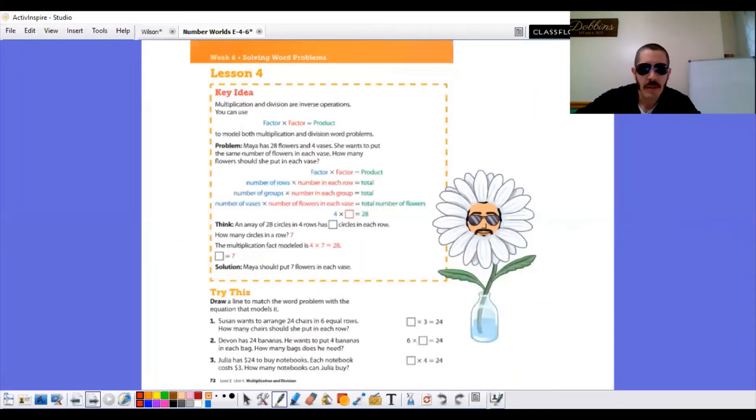Open up your book to page 72. We are, of course, on lesson four. Key idea says multiplication and division are inverse operations. You can use factor times factor equals product to model both multiplication and division word problems. Here's our problem. Maya has 28 flowers and four bases. She wants to put the same number of flowers in each base. How many flowers should she put in each base?